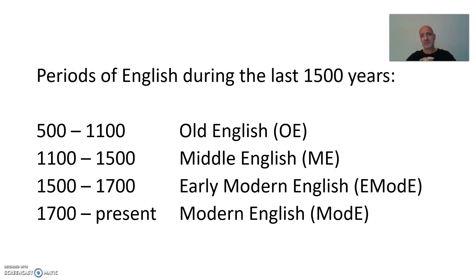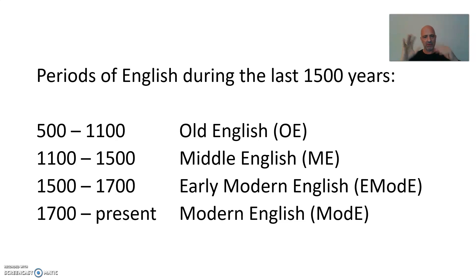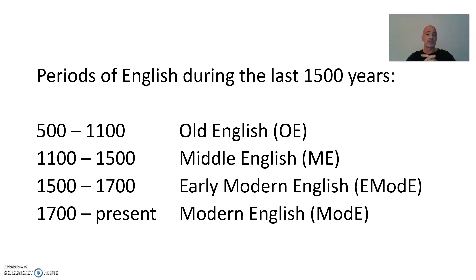There are many different ways of dating those periods, but for us this will work fine. From 500 to 1100: Old English (OE). From 1100 to 1500: Middle English (ME). From 1500 to 1700: Early Modern English. And from 1700 up to the present: Modern English. These can be further subdivided into early, middle, and late sub-periods, and I will do so if we have to.